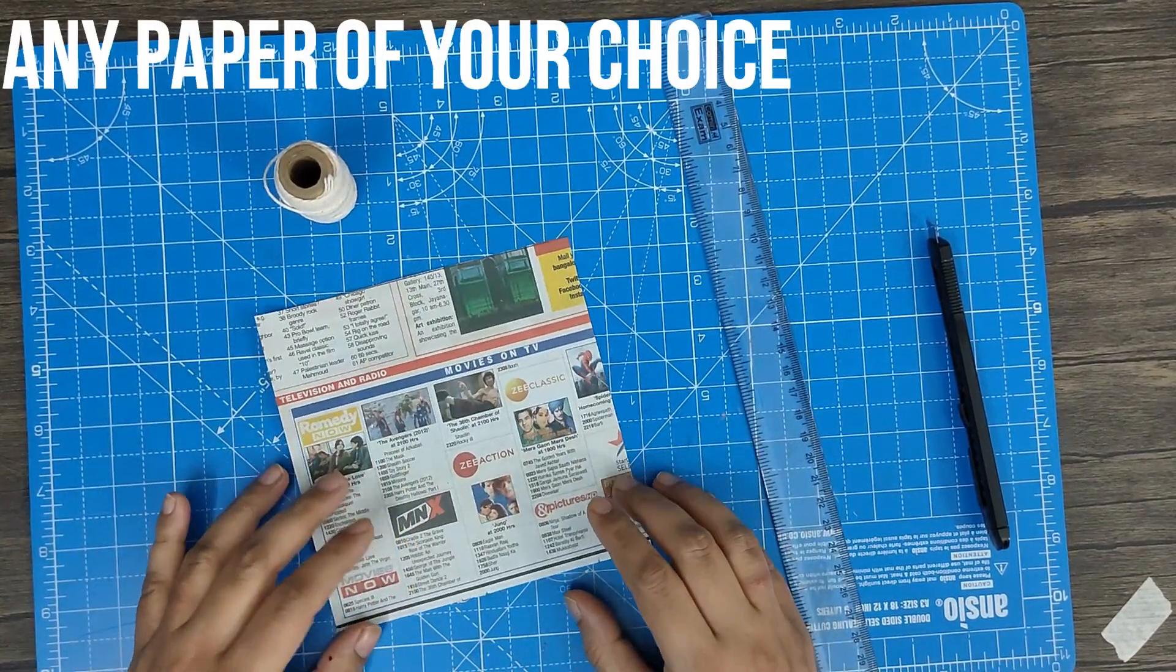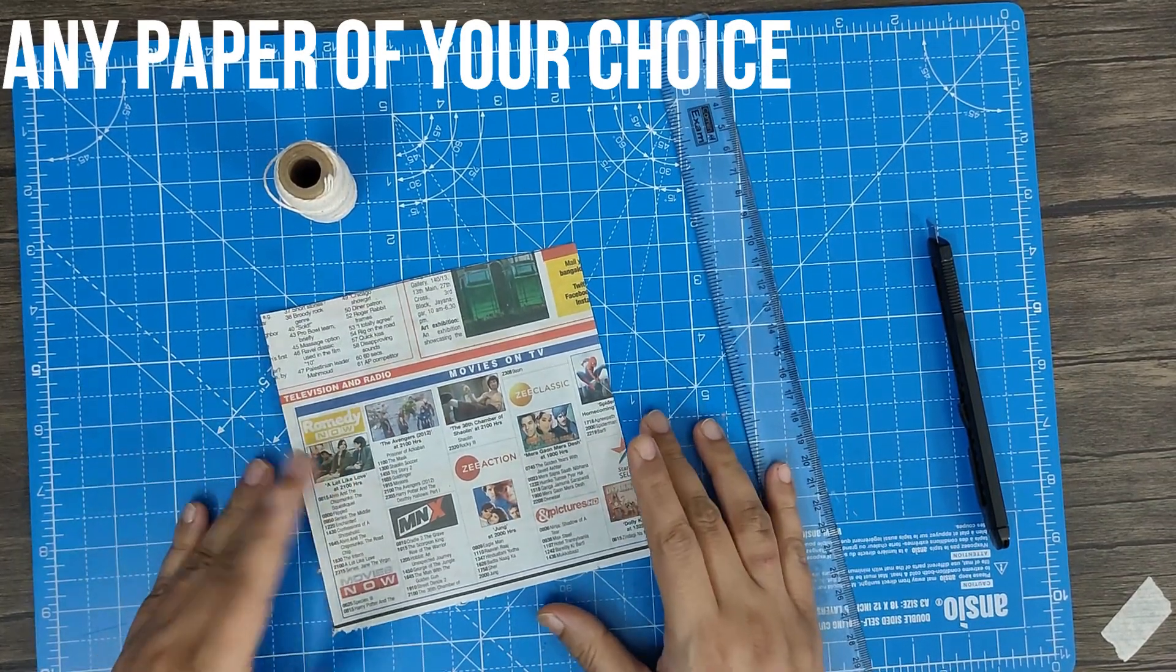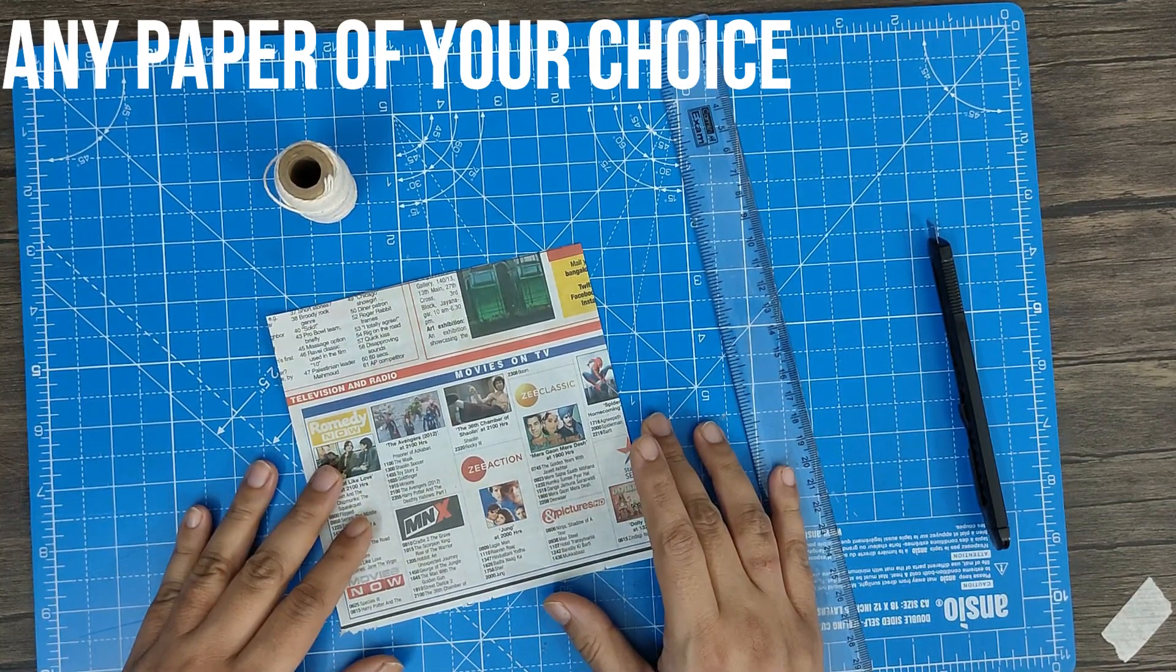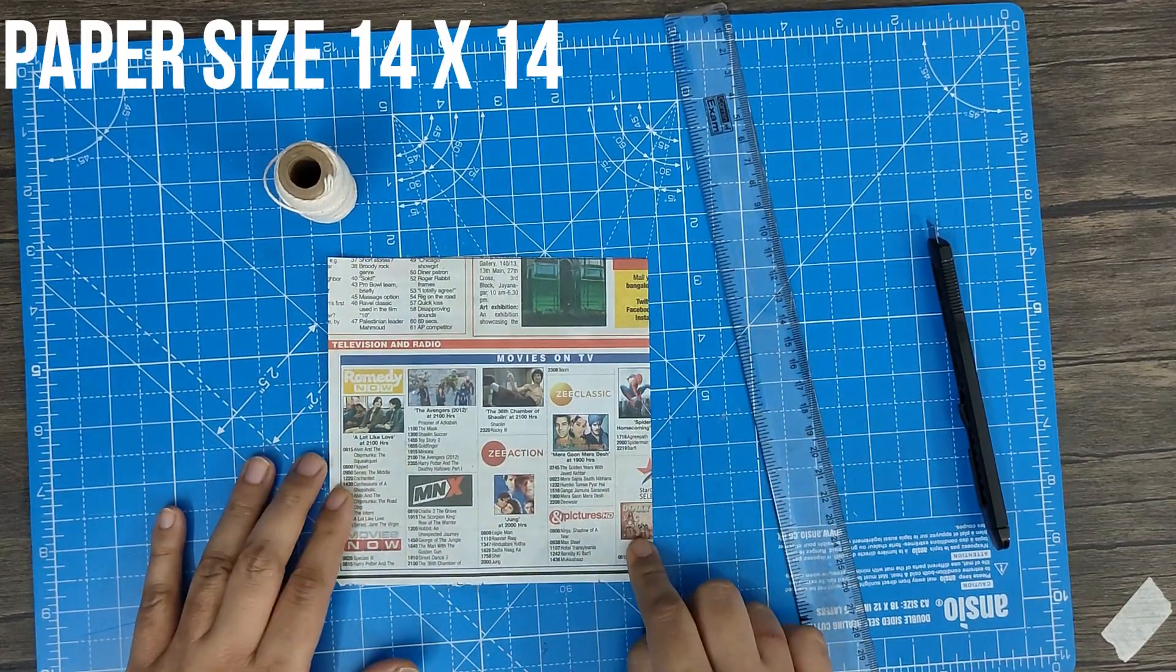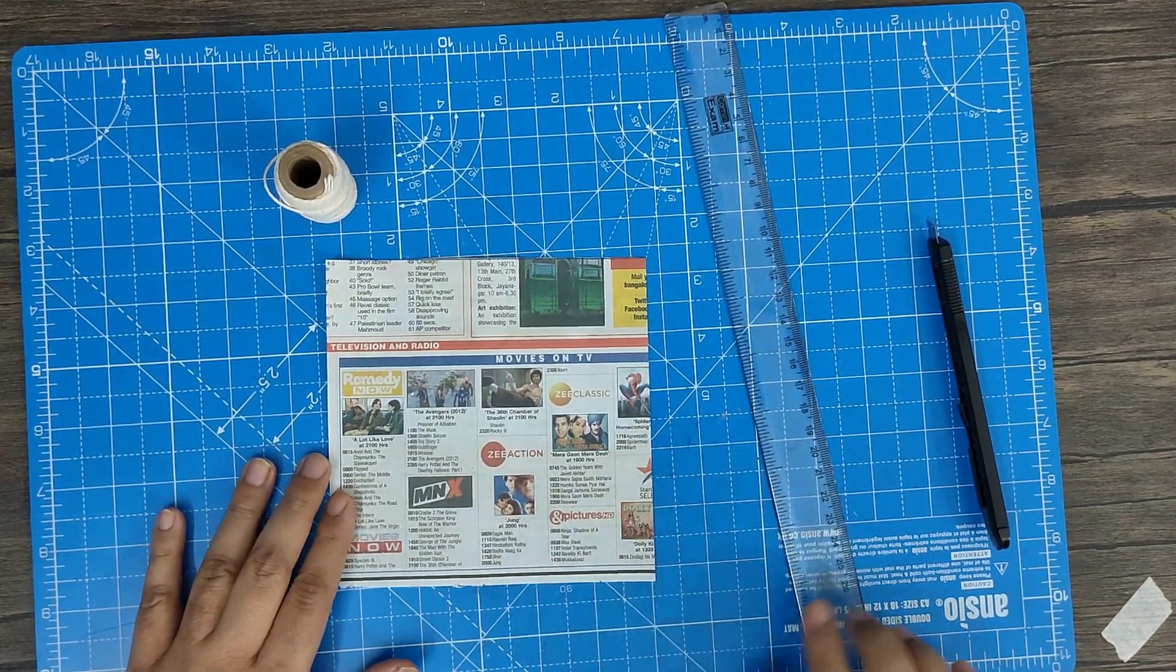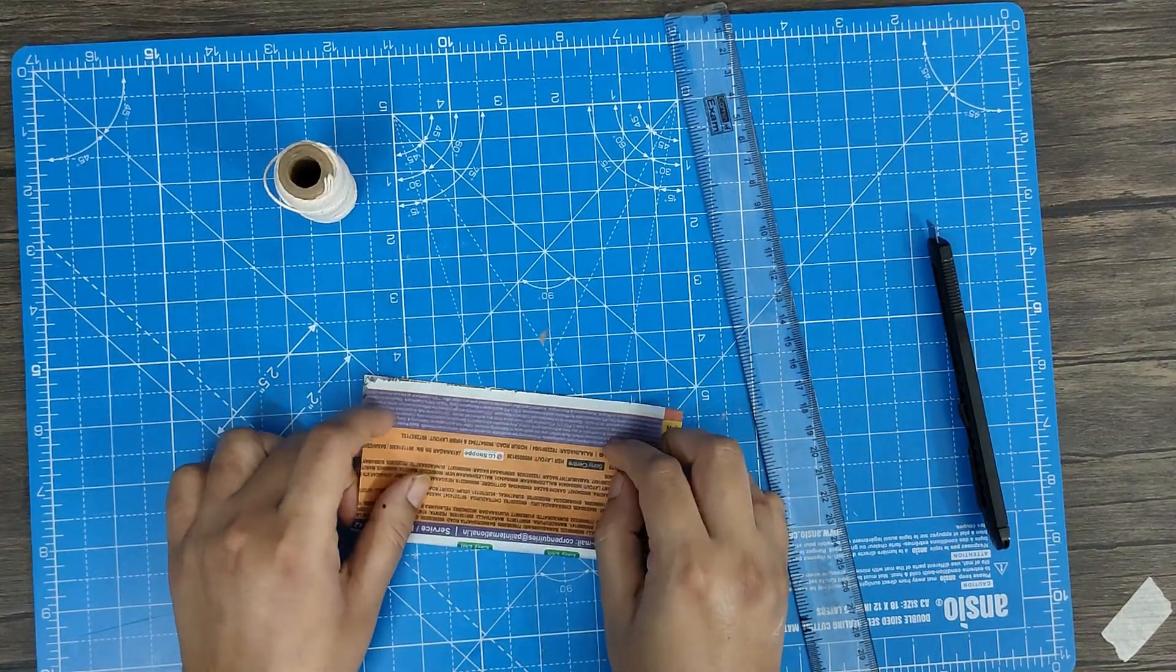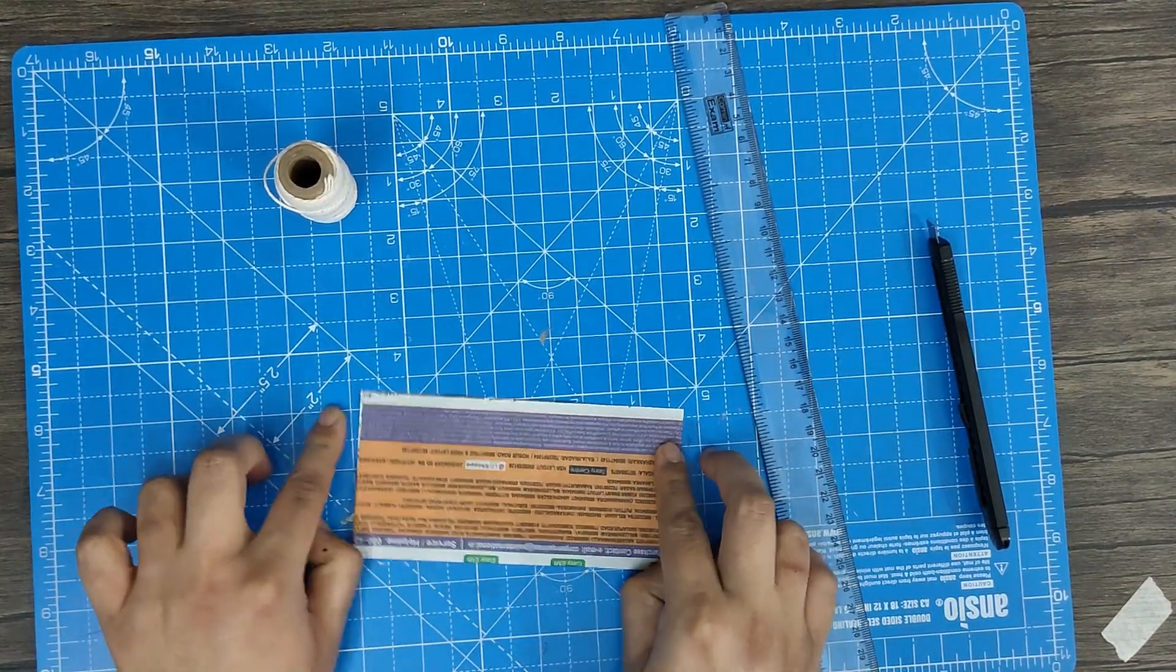I'm using newspaper, but you can use origami paper, colored paper, or white paper - whichever paper you have. I've already pre-cut it to 14 centimeter by 14 centimeter, so you need a square for this.